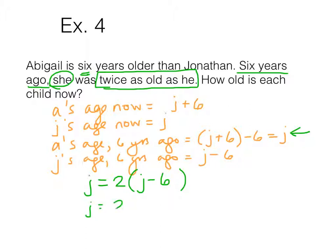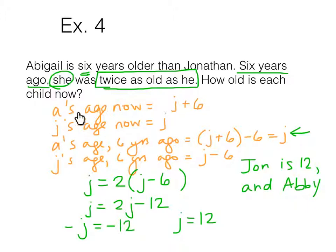We're going to distribute. We get 2J minus 12. We're going to subtract 2J, since we can't subtract J. Negative J equals negative 12. So J equals 12. Jonathan is 12. And Abigail, I'm going to go for the brevity thing, go with Abby. Abby is, go back and look at your defined variables. Abby's age now is J plus 6. So 12 plus 6, Abby is 18.